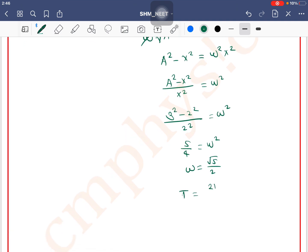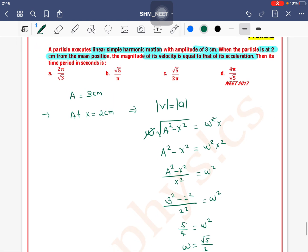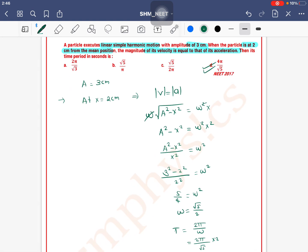So T equals 2π divided by √5/2, which gives 4π/√5. Therefore, 4π/√5 means option D is the correct one.